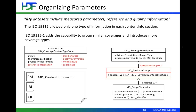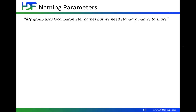Another example is a situation where you're naming the parameters in your dataset, and my group uses local parameter names but we need standard names to share. This is typical in situations where groups create data for a specific purpose and share observations within their group, but another group down the hall or around the world uses different names for those parameters. In ISO 19115, there's a 'sequence identifier' — an obscure name — but it only allowed one local name for parameters.